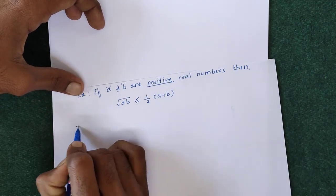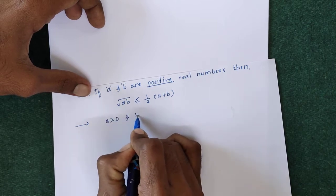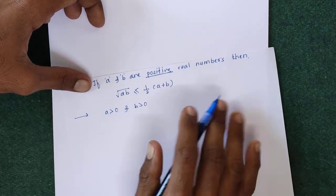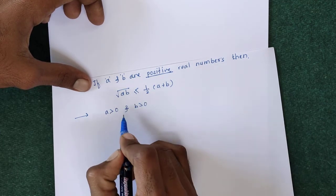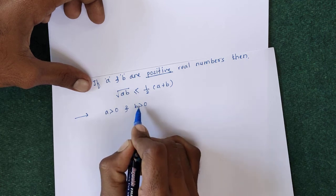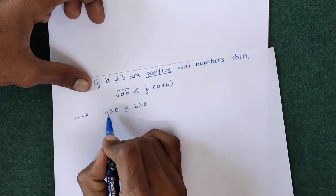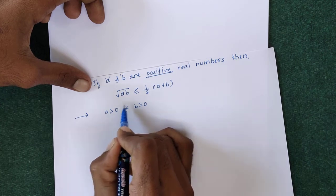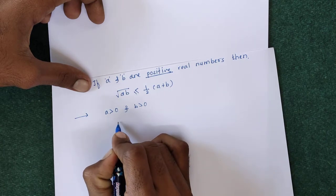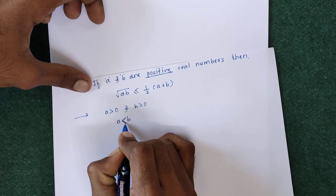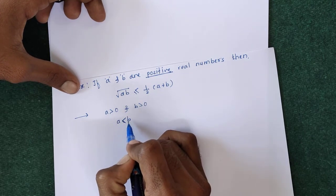We are given that A and B are both positive real numbers, so A > 0 and B > 0. To prove that √(AB) ≤ ½(A + B), since A and B are positive real numbers, they must satisfy the order property — one of them is less than the other. Suppose A < B, since both are positive numbers.